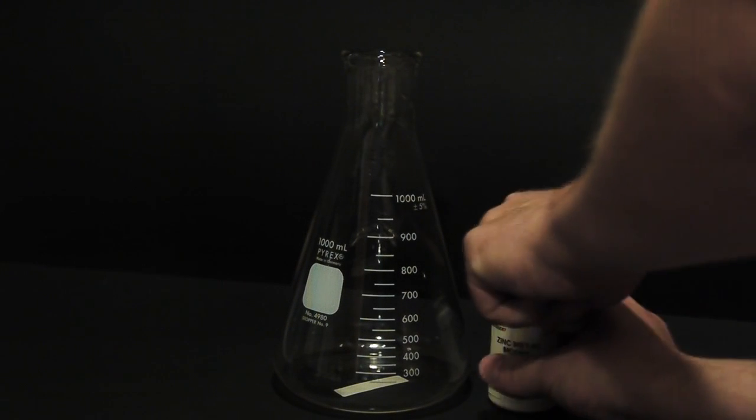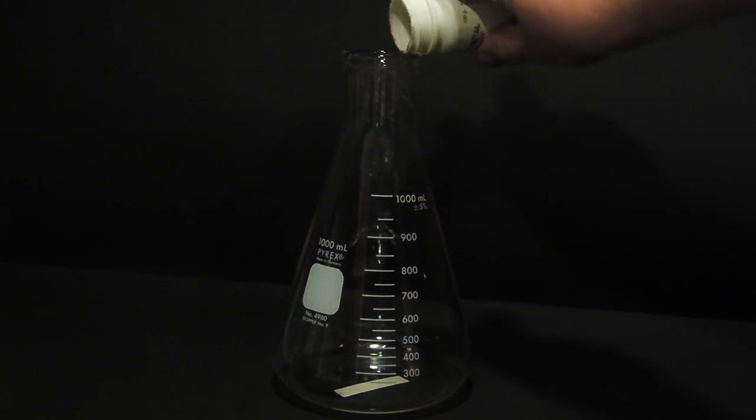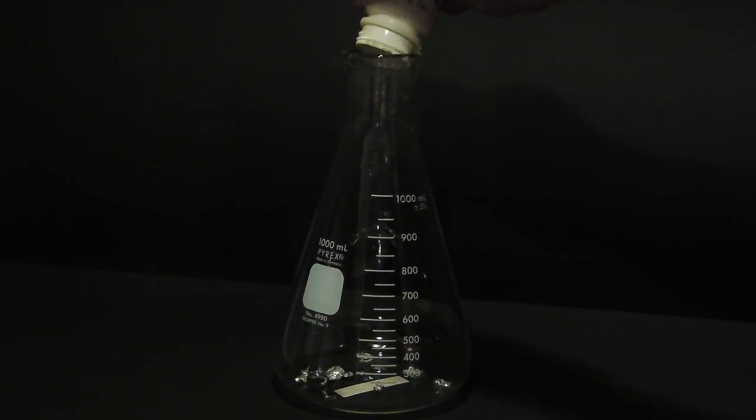Now in order to generate hydrogen gas, we're going to need to put zinc together with some hydrochloric acid. So I'll go ahead and pour the zinc into the container.